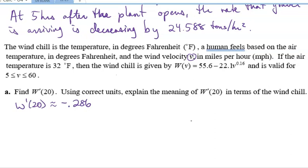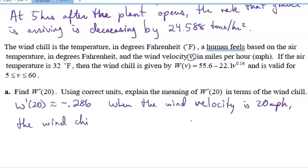So what does this mean in the context of the problem? So this is going to be, so when V is equal to 20. So when the wind velocity, that's my T time, but it's not really a time this time. When the wind velocity is 20 miles per hour, the wind chill is, now we could say changing, decreasing. Again, I'm going to go with decreasing because it's negative. So I'm going to say is decreasing by 0.286.